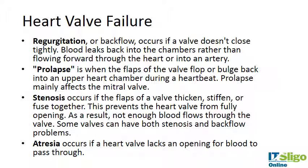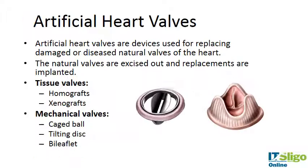Prolapse mainly affects the mitral valve. Stenosis occurs if the flaps of a valve thicken, stiffen, or fuse together — it prevents the heart valve from fully opening, so not enough blood flows through. In some cases valves can have both stenosis and backflow problems. Atresia occurs if a heart valve lacks an opening for blood to pass through. All of these lead to heart valve failure, some more serious than others, and may necessitate valve replacement.